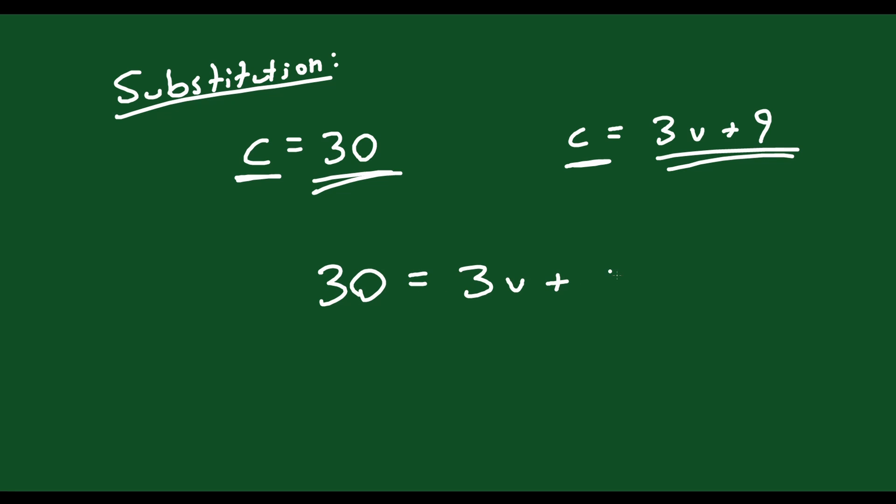30 equals 3V plus 9. I can do that. And when I solve for V, that'll tell me the location where they're equal to each other. It'll tell me the point of intersection.